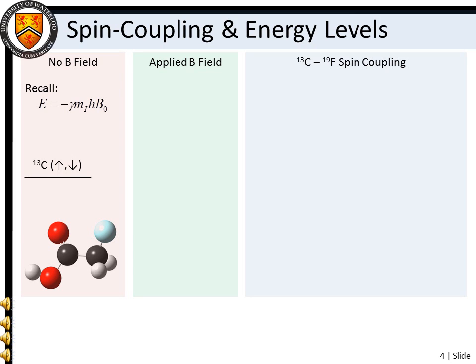We can also show the effect of spin coupling by using an energy level diagram. If we apply a magnetic field to our sample, nuclear magnetic moments that are aligned with the external field are lowered in energy, while those aligned against the external field are raised in energy. It is the transition from the spin-up to spin-down state that we measure with NMR.